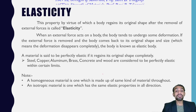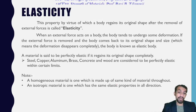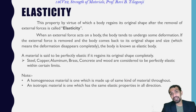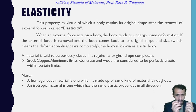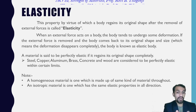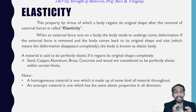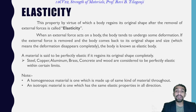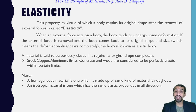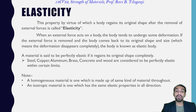Note: a homogeneous material is one which is made up of the same kind of material throughout, which will hold good elasticity. An isotropic material is one which has the same elastic properties in all directions. Whenever we consider a material, we always say that it should be homogeneous and isotropic because it is having its own property.